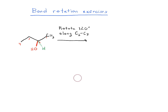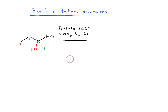In this video we're going to start with doing a bond rotation exercise. We're going to start with this molecule here on the left, and we're going to rotate carbon 2 along the C2 to C3 axis — 120 degrees. I'd like you to try to do this: press pause, try and do it yourself, and then when you're ready, press play.